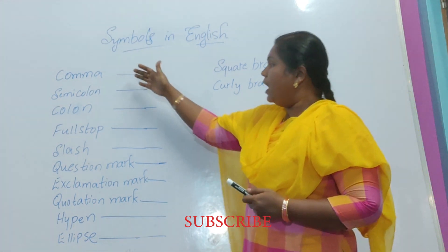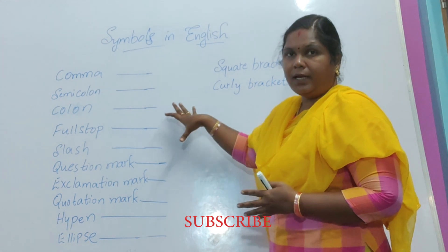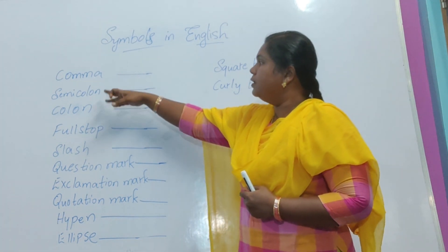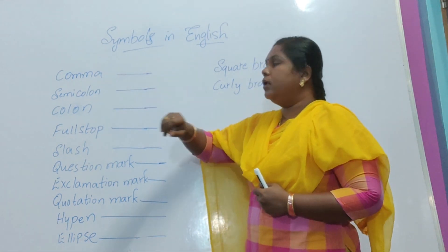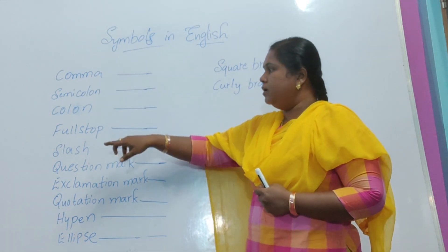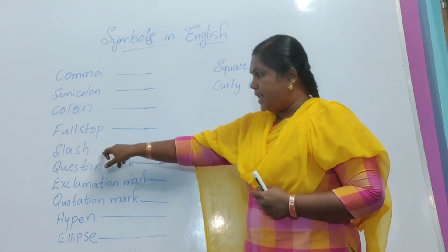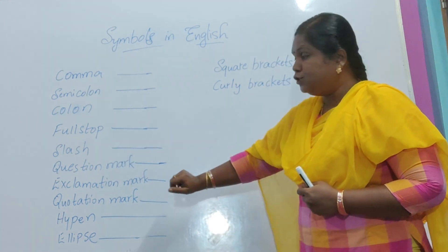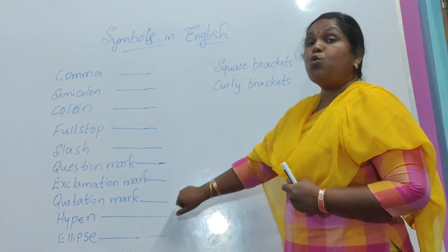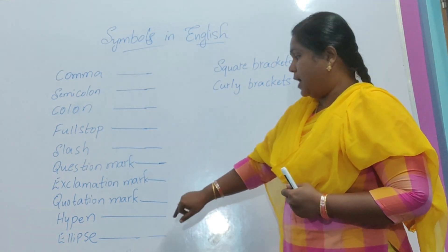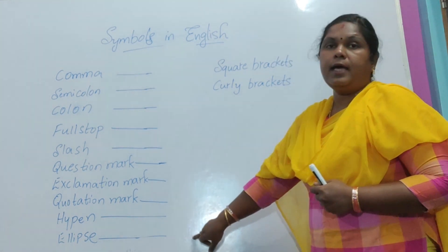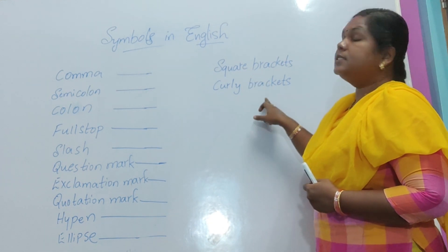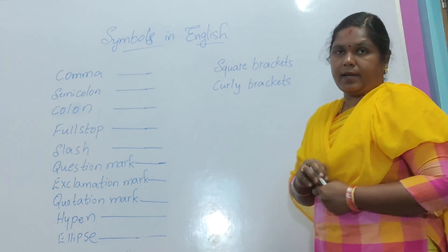I have written a few symbols here. Let me read them once: comma, semicolon, colon, full stop, slash, question mark, exclamation mark, quotation mark, hyphen, ellipse, square brackets, curly brackets.